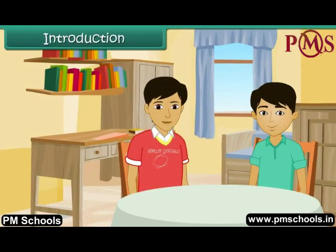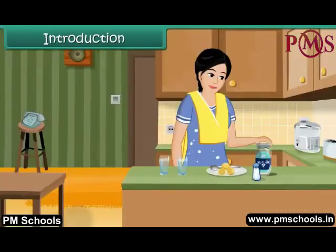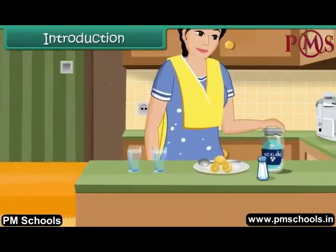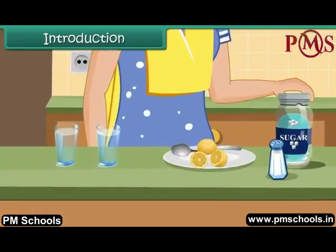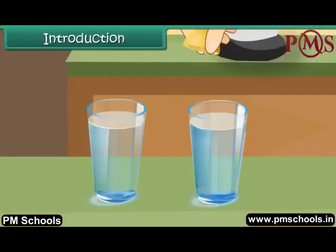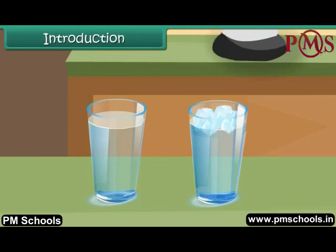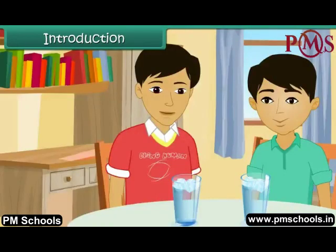Tarun is at his friend Kunal's place. Kunal's mother is preparing some lemonade for him. She squeezes some lemon juice in a glass of water, adds sugar and ice cubes, and serves it to him.